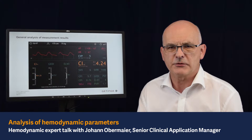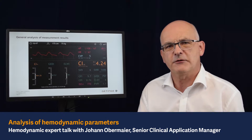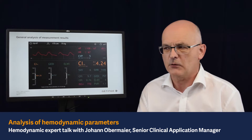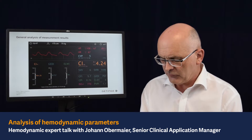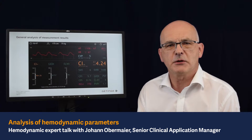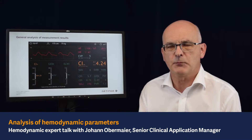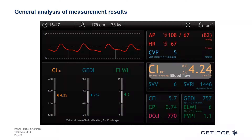Going back to physiology, what are we interested in? We are interested in the blood flow and determinants of blood flow and lung flow. So where do we find information on blood flow in the result screen? The blood flow is represented by the cardiac index.